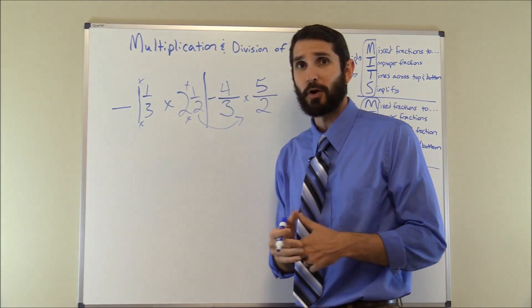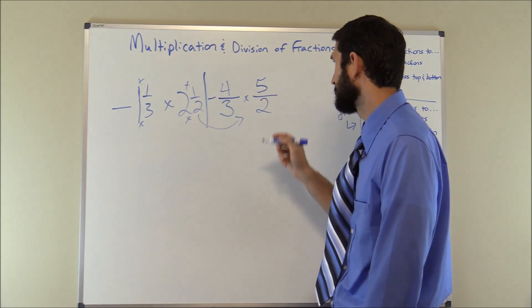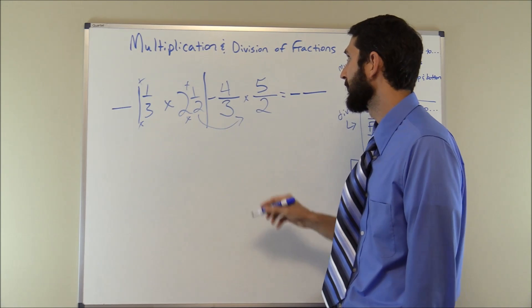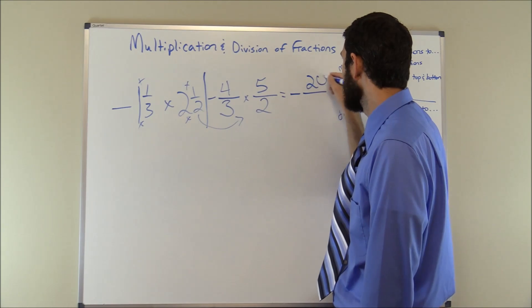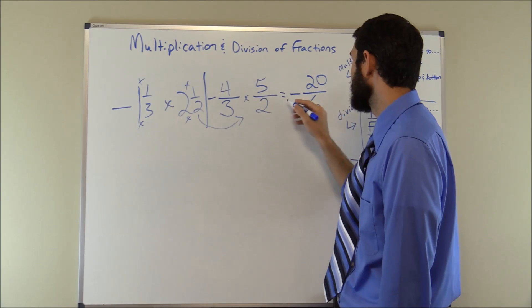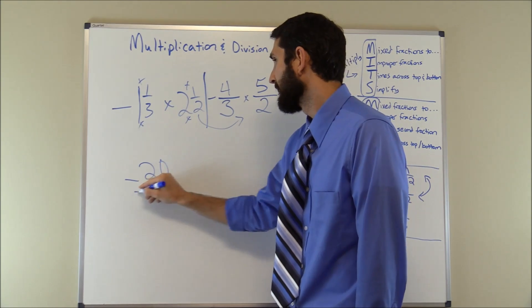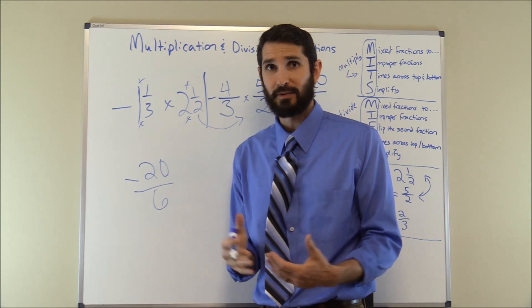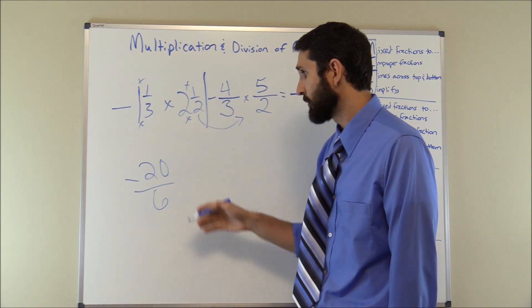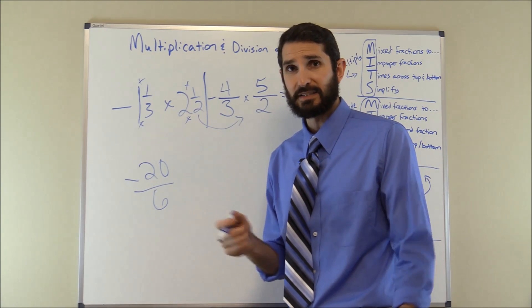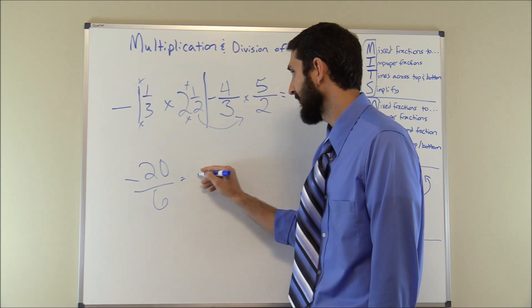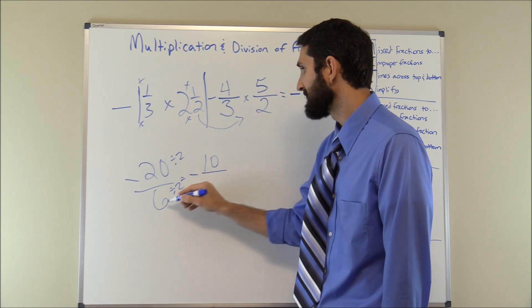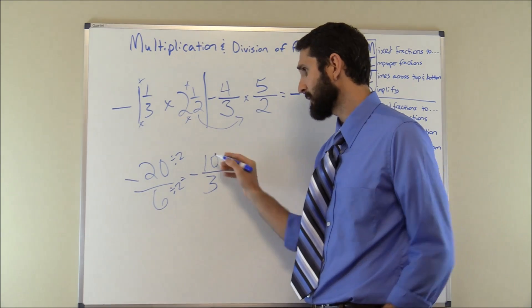We have negative four over three times five over two. A negative times a positive gives a negative, so we carry the negative sign. Times across the top: four times five is twenty. Times across the bottom: three times two is six. So we have negative twenty over six. Now simplify — the greatest common factor of twenty and six is two. Twenty divided by two is ten, and six divided by two is three, giving us negative ten over three.